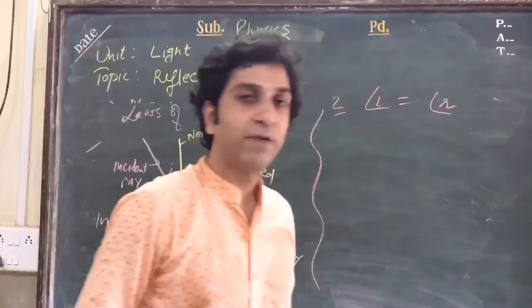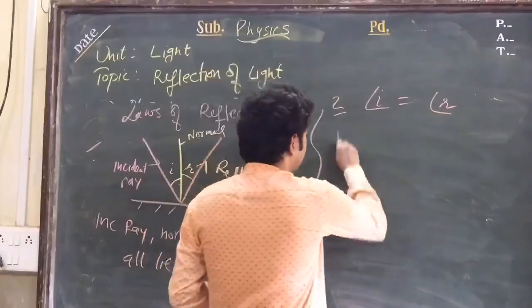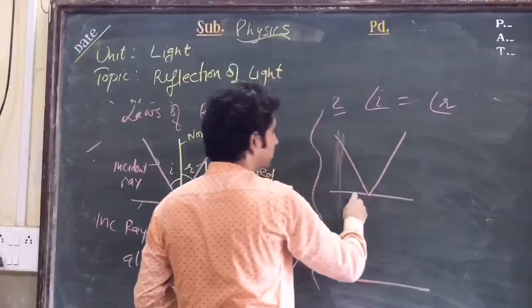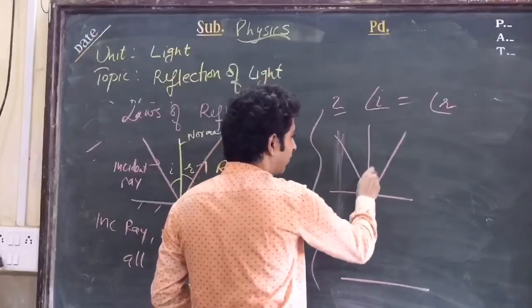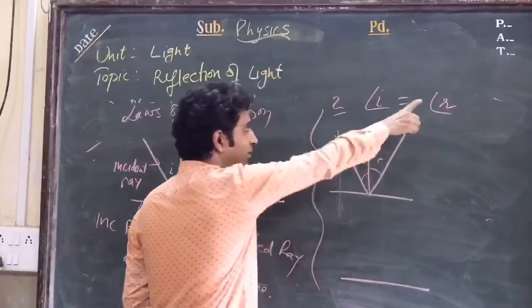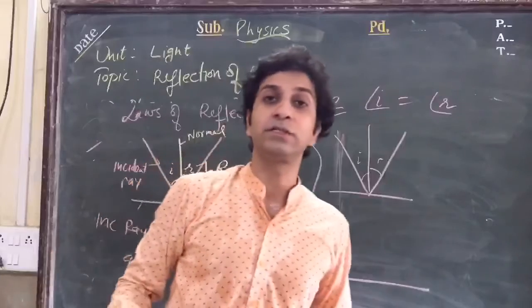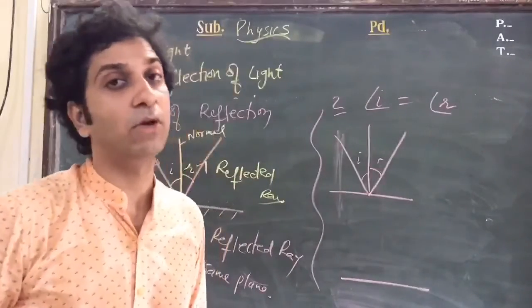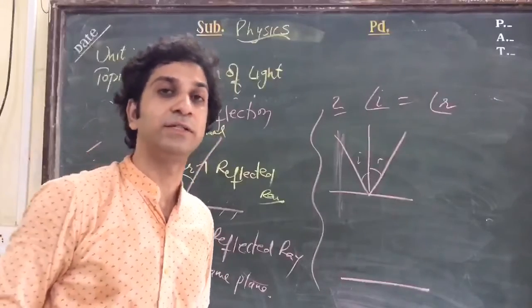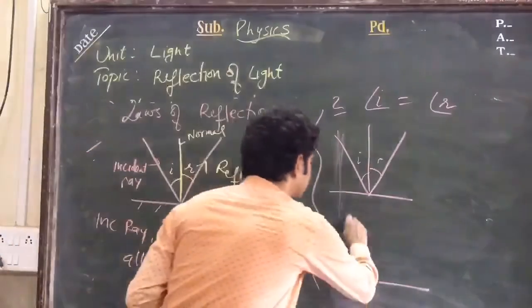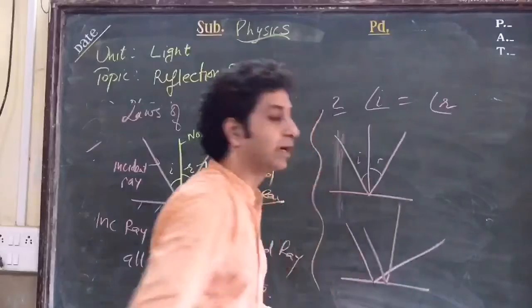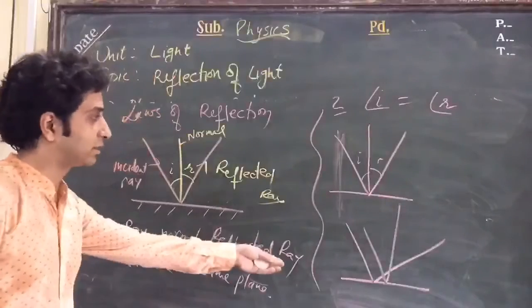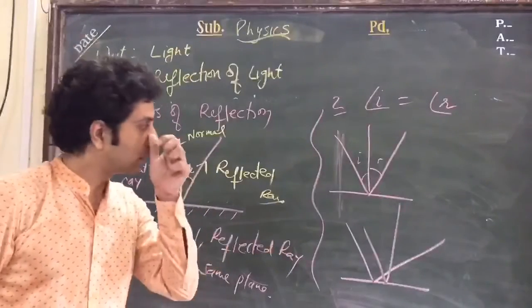You can also define regular reflection and diffuse reflection in this aspect: the reflection which obeys i = r is called regular reflection, that which follows the laws of reflection. That which does not follow the laws of reflection is called diffuse reflection.